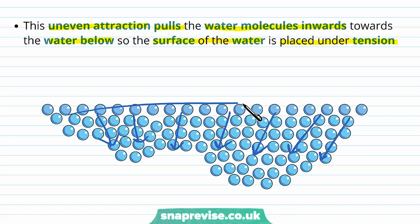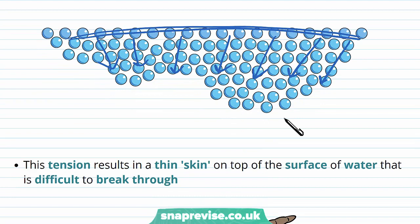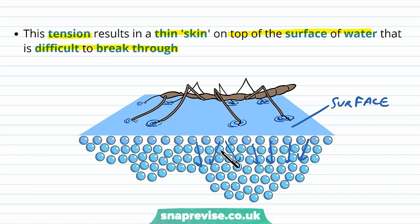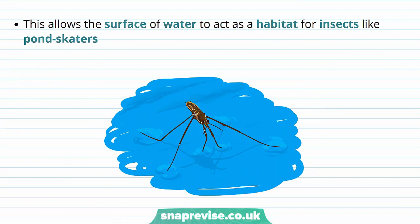The tension results in a kind of thin skin of water on the top of the surface — still made of water, but very tense compared to the water underneath — and it actually acts as a barrier which is harder to break through. Because these surface water molecules are being pulled inward more strongly than they are to the air molecules, they form this tense layer on top. This provides a habitat: the surface of the water can act as a habitat for insects such as pond skaters, where the pond skater can sit on the water to find other insects.